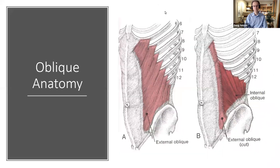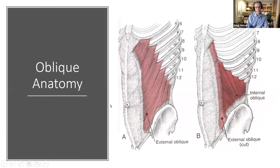And of course here are the obliques. This is the external oblique, which is a contralateral rotator. This is the internal oblique, which is an ipsilateral rotator. So for instance, the left external oblique will rotate the person to the right, but it will limit your capacity to rotate to the left.